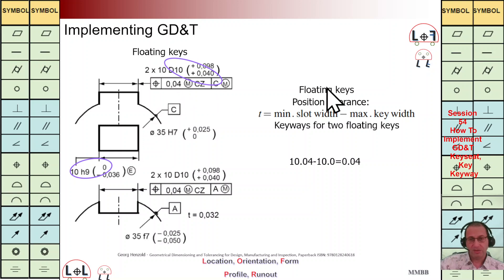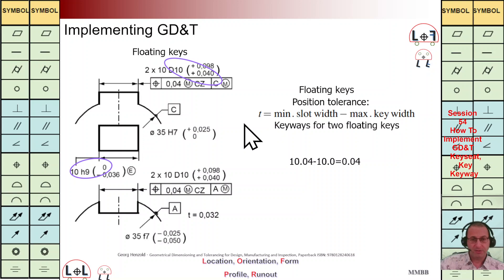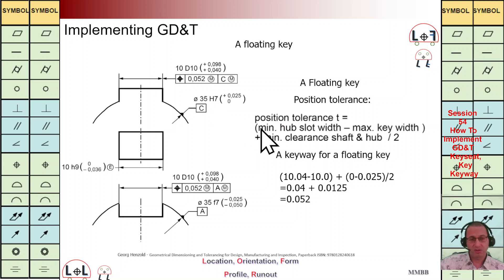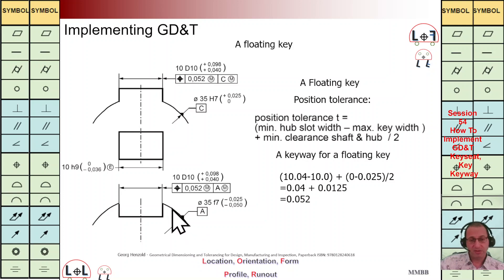Here we have two keys. In the next example — the last example for today — we are going to have one floating component, so we can have more TZ for positioning. We are going to use the same formula: what is the clearance between the key and key slot, plus the minimum clearance between the shaft and hub, divided by 2.